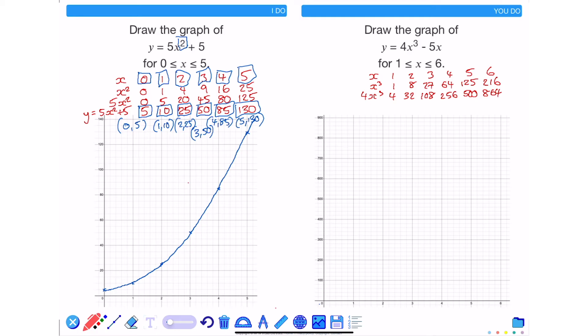I also need to work out what 5x is, so 5 times 1 is 5, 10, 15, 20, 25 and 30.